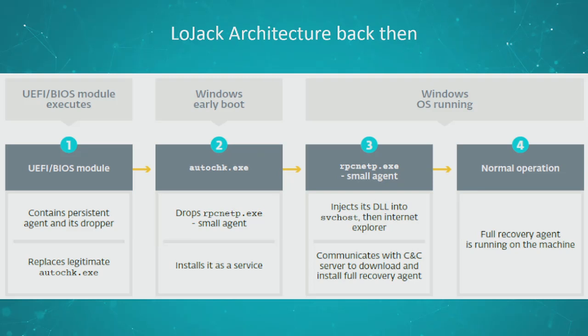The first step is the BIOS or UEFI module, which contains the agent and its dropper. It will go ahead and replace a file called autochk.exe that is present on all Windows systems. Autochk.exe is basically an integrity check for your hard disk — as Windows is booting up, you will sometimes see a percentage on your boot screen, and this is autochk checking the integrity. But what LoJack does is replace it so that it can install its own agent, which is step two — the main idea is to install the small agent as a service. Once the service is started in step three, you have the small agent, whose role is to make sure that the full recovery agent is always running. If it's not there, it has the ability to connect to a distant server, download some code, and execute it.